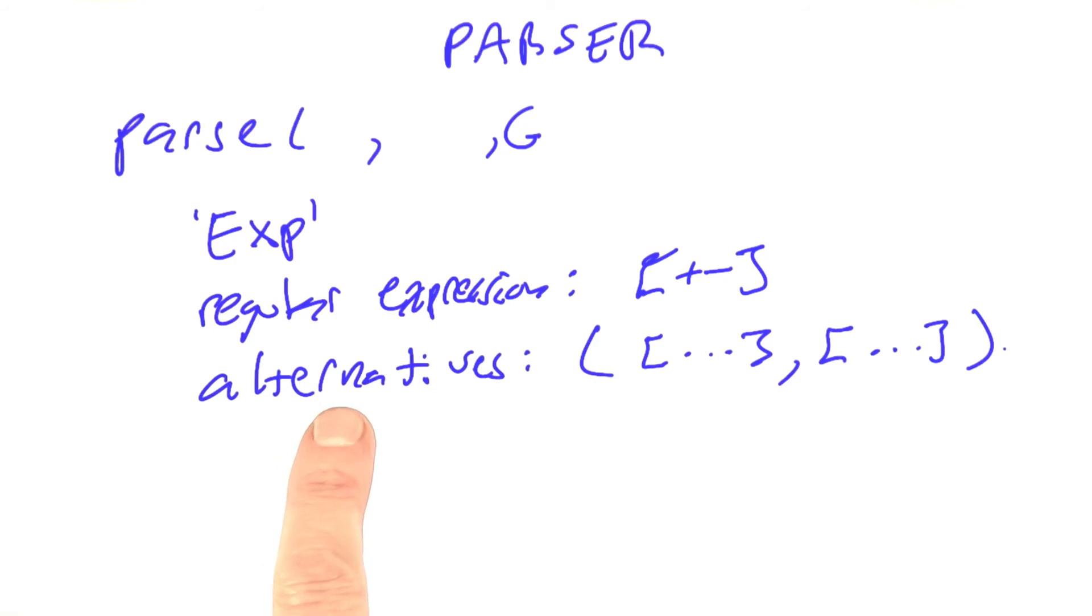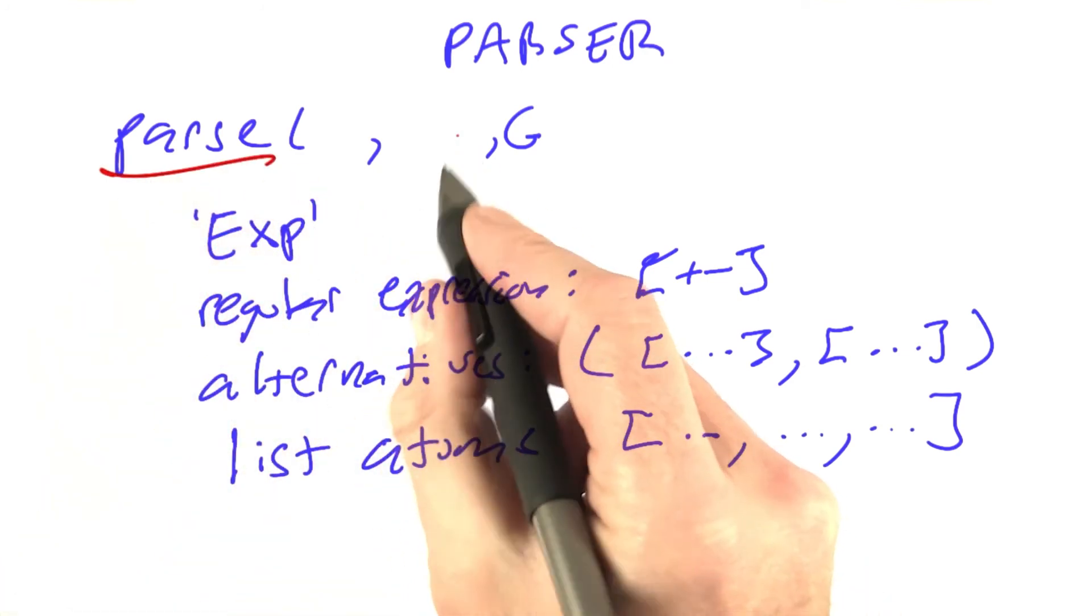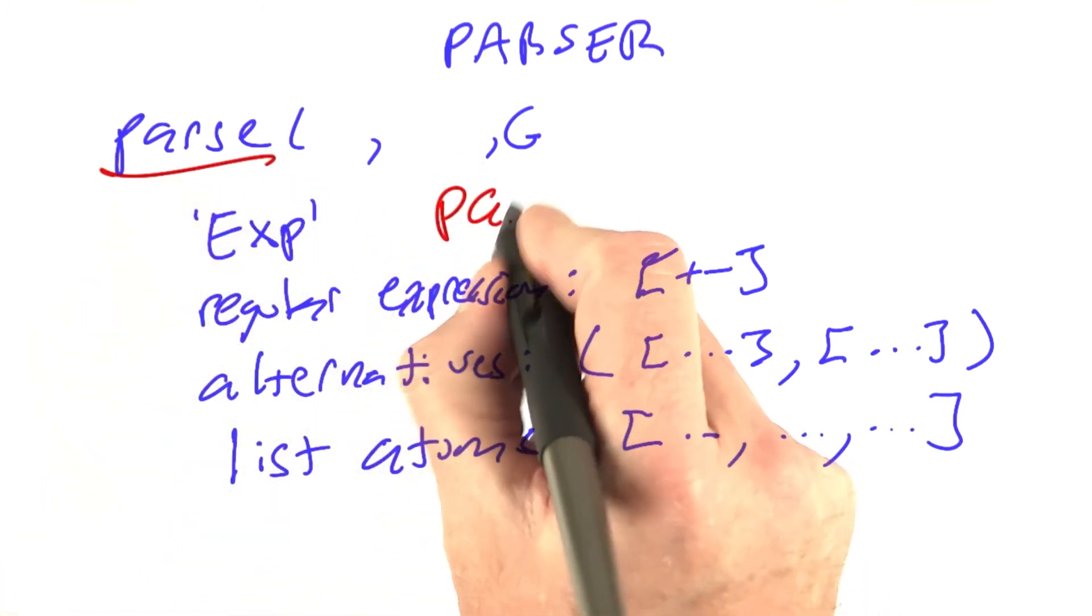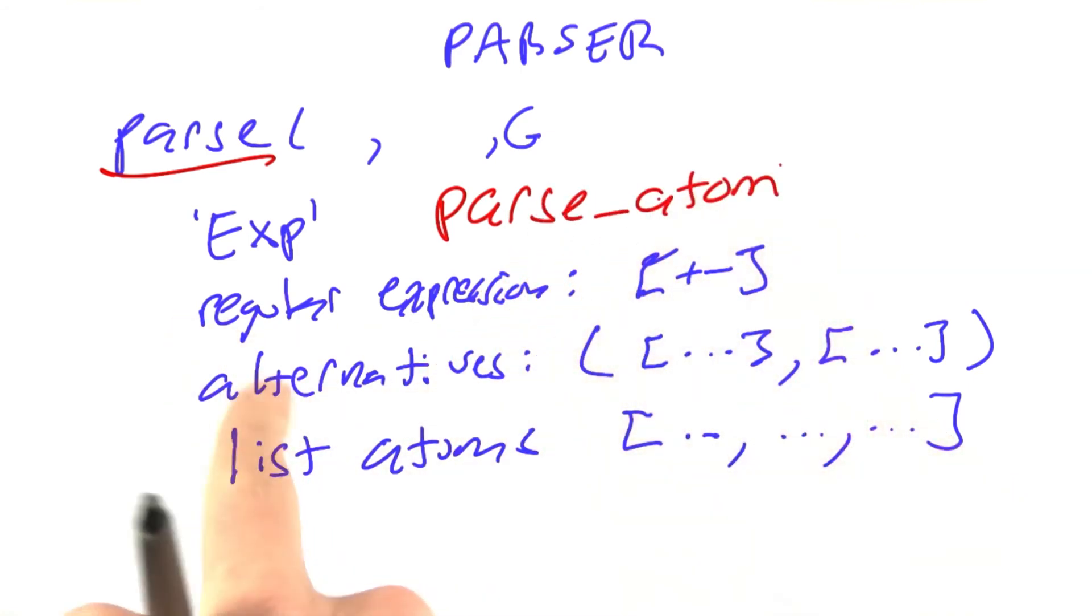We're going to have to be able to parse a tuple of alternatives here, one alternative or another alternative done in left to right order. Finally, we're going to have to be able to parse a list of atoms representing a sequence. I'm going to tell you the plan for how we're going to implement this as code within the function parse. This first case I'm going to handle with a subroutine called parseAtom. This is an atomic expression. We should be able to handle that.